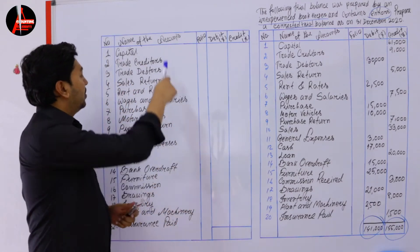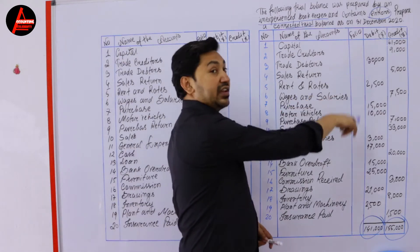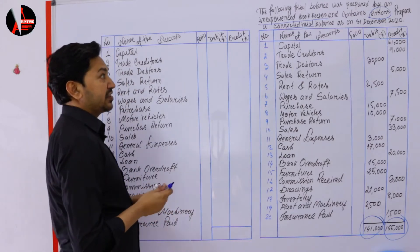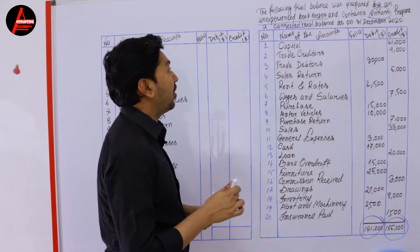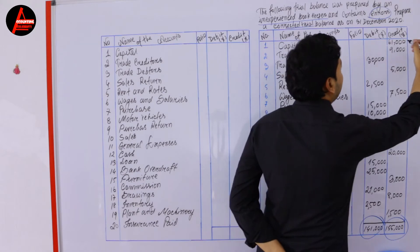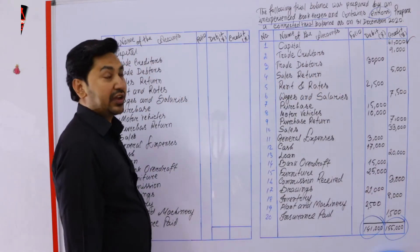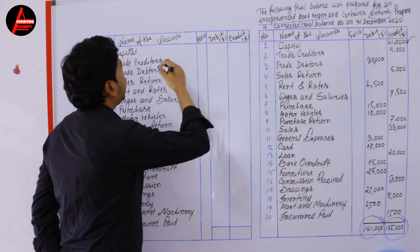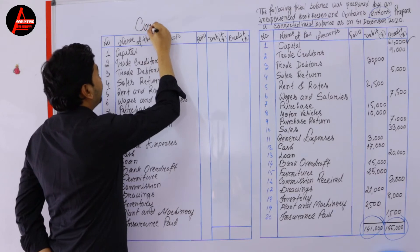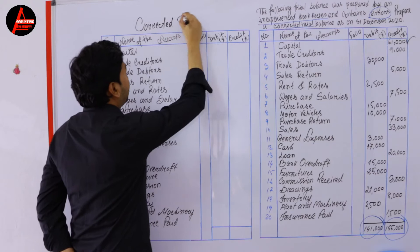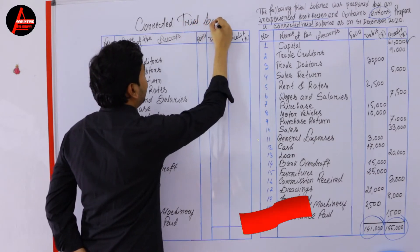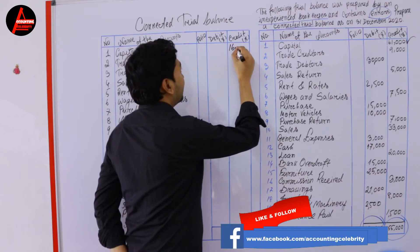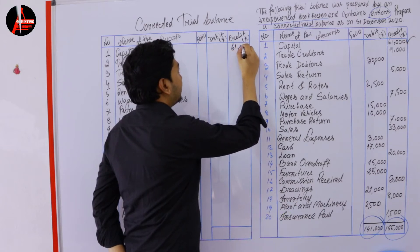Look at here. These items are already written. We will take each value and try to extract where the mistake is. The first one is capital — 61 thousand dollars. Capital is given on the credit side. Capital is credited, and this inexperienced bookkeeper wrote the value of capital on the credit side correctly. We are preparing the corrected trial balance now, so write capital: 61 thousand dollars on the credit side.